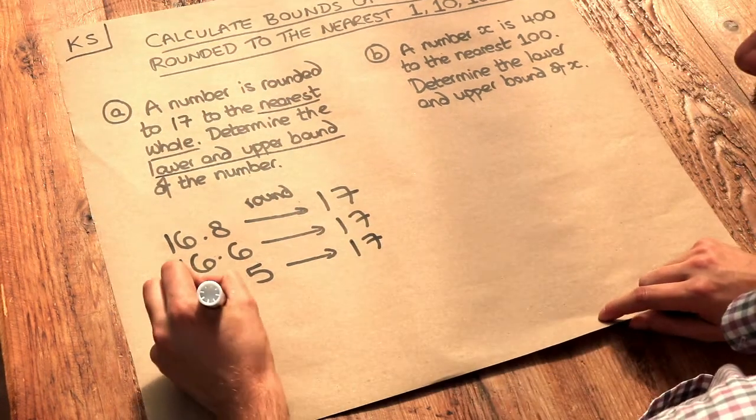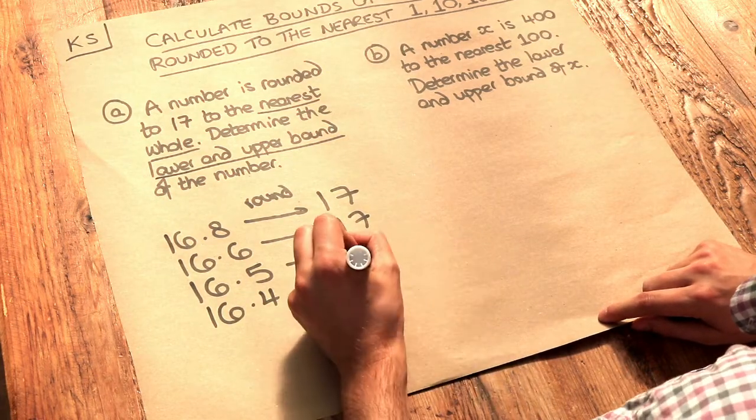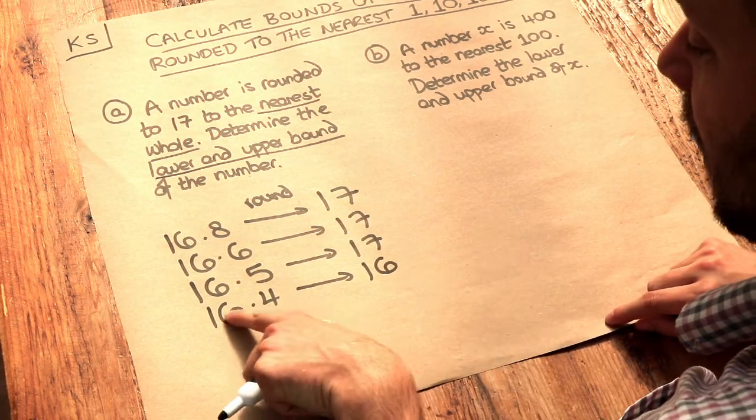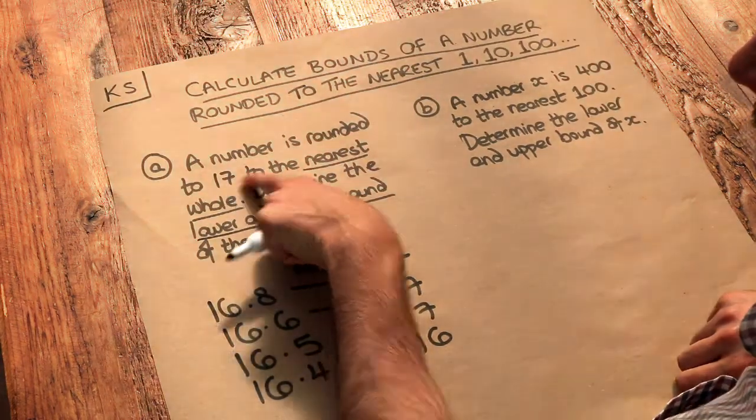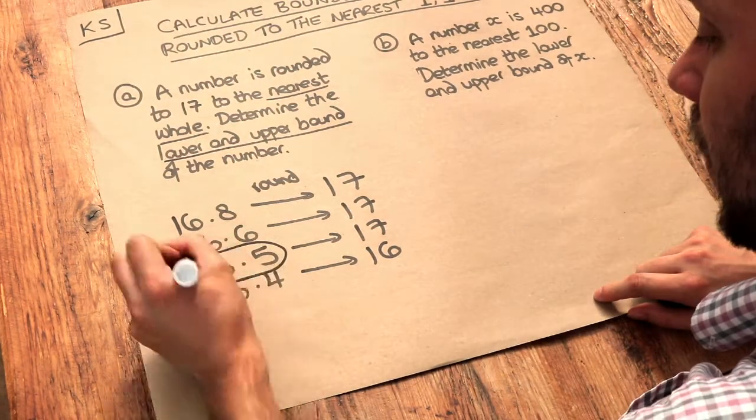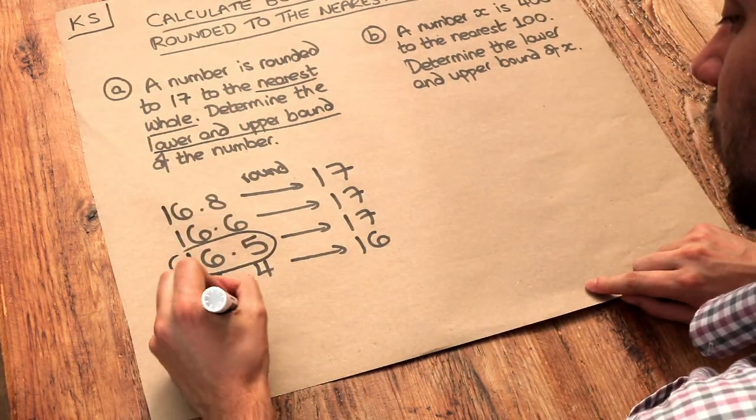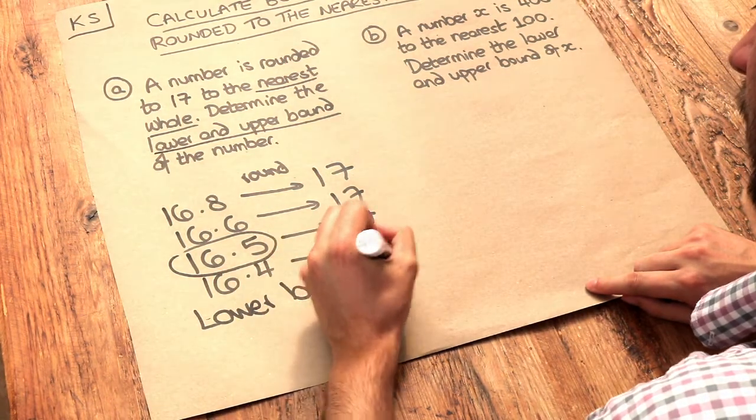However, if we had 16.4, that to the nearest whole is 16. So this appears to be too low because when we round to the nearest whole, we get 16 and not the 17 in the question. So this here therefore is the lower bound. So the lower bound of the number is equal to 16.5.